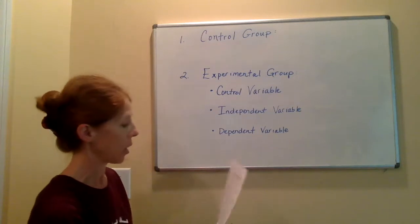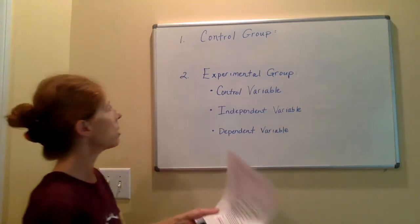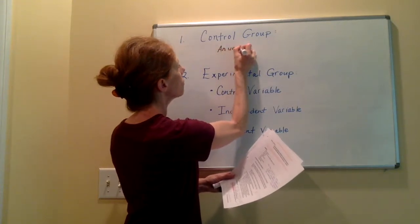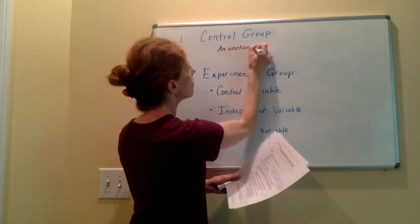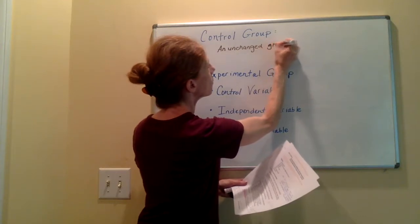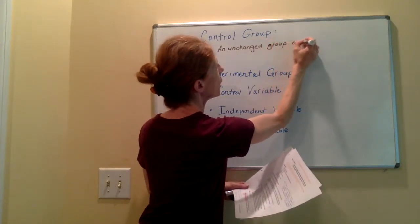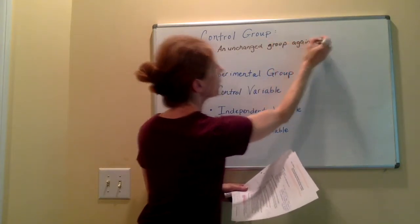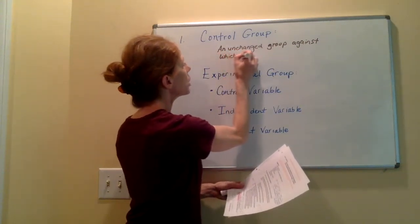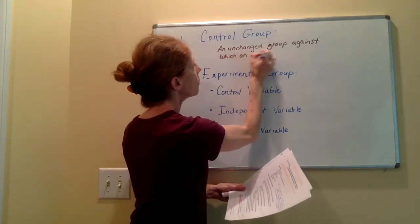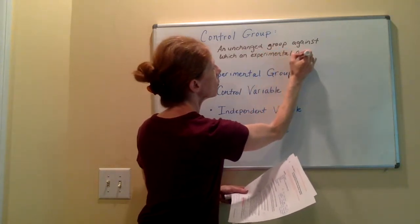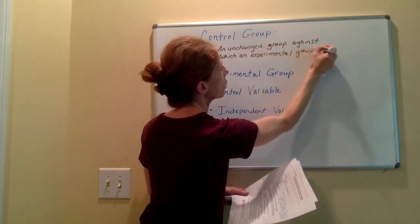The definition of a control group is: an unchanged group against which an experimental group is measured.